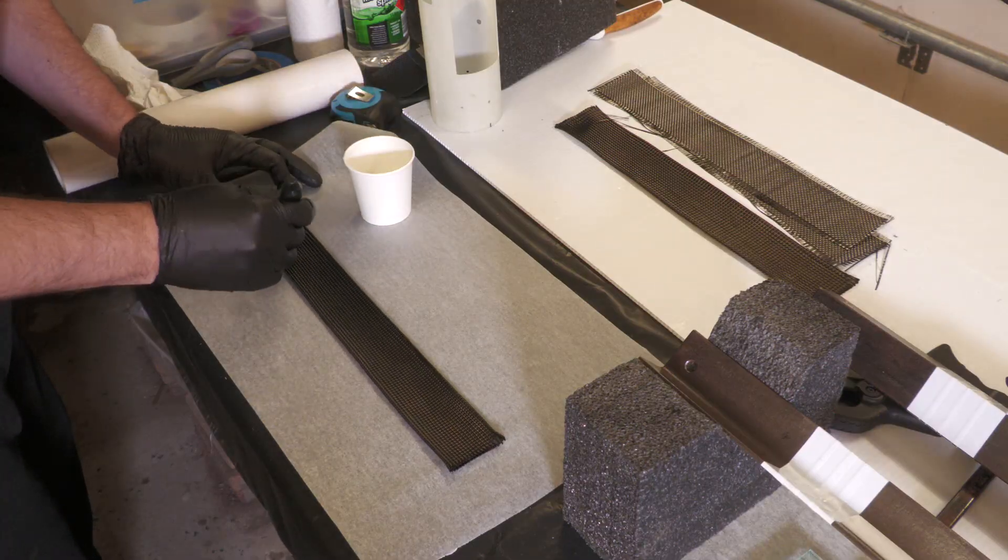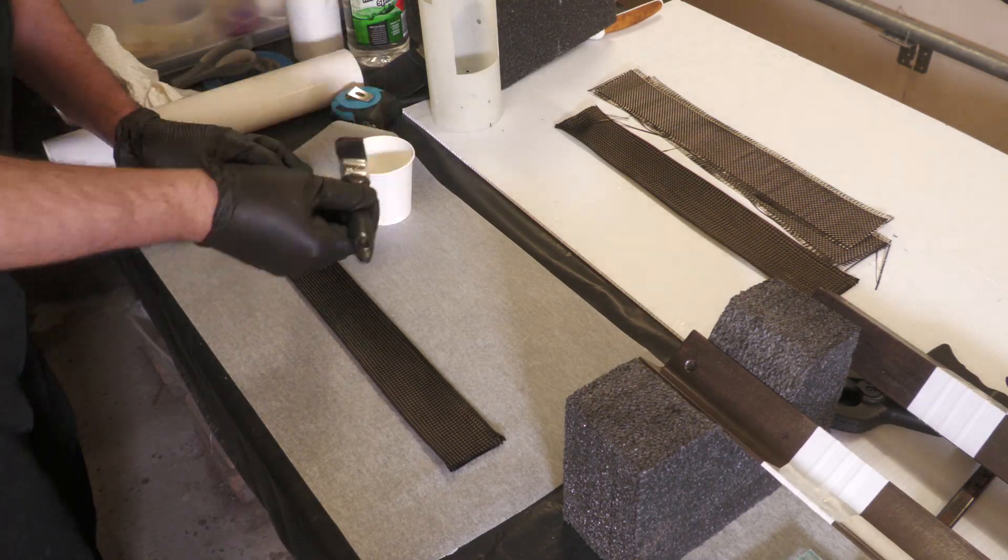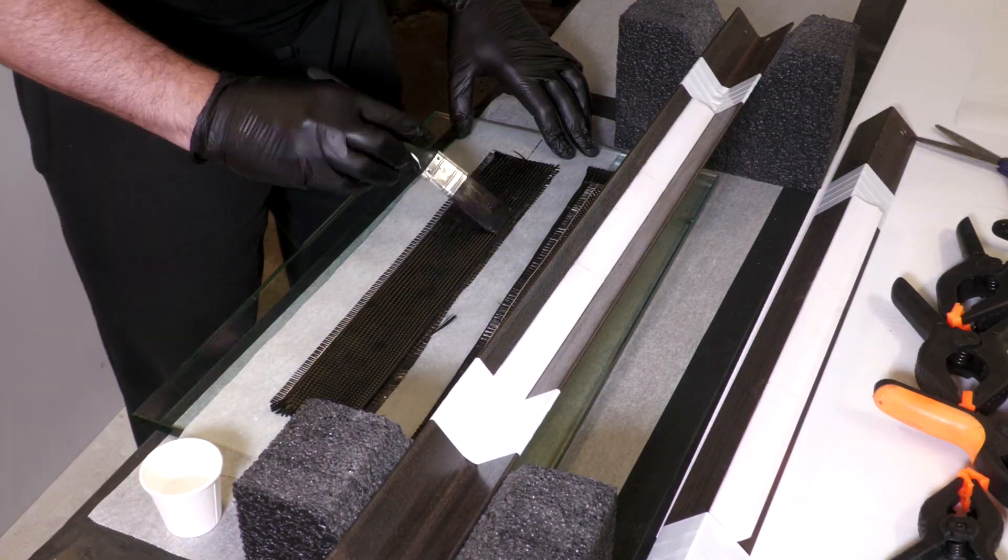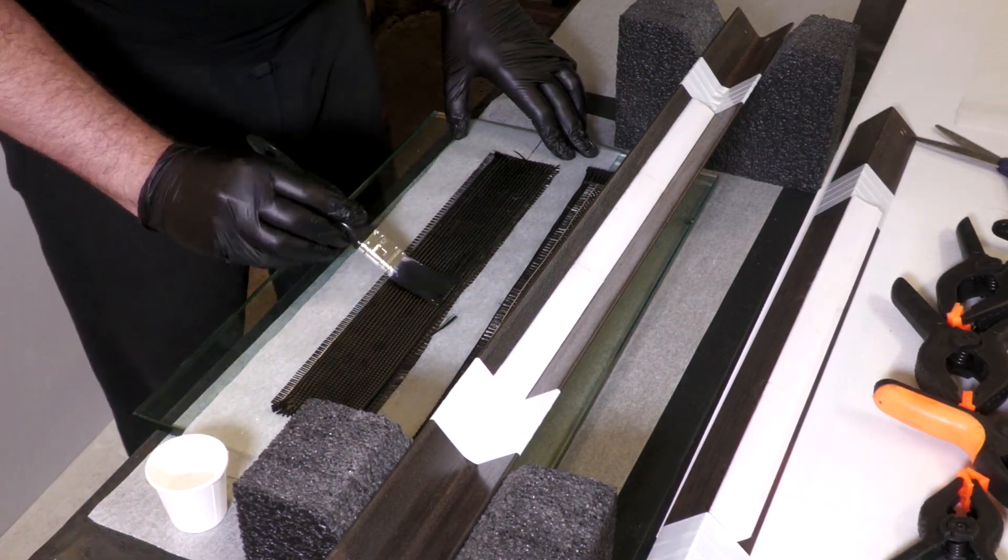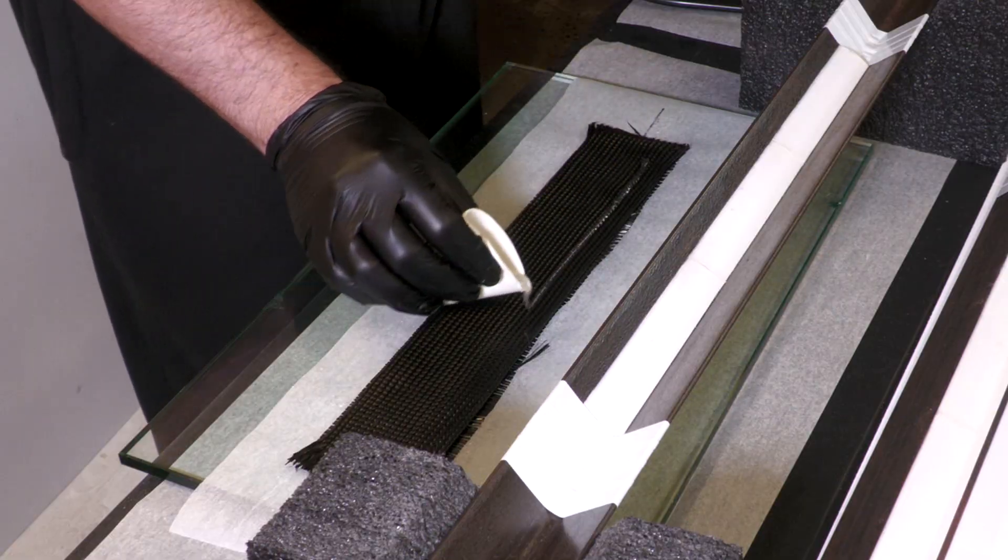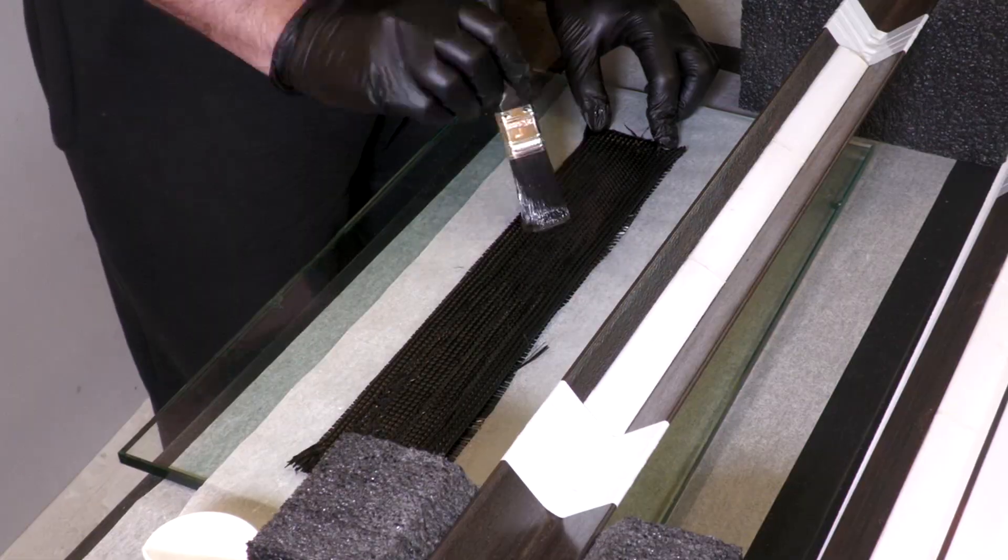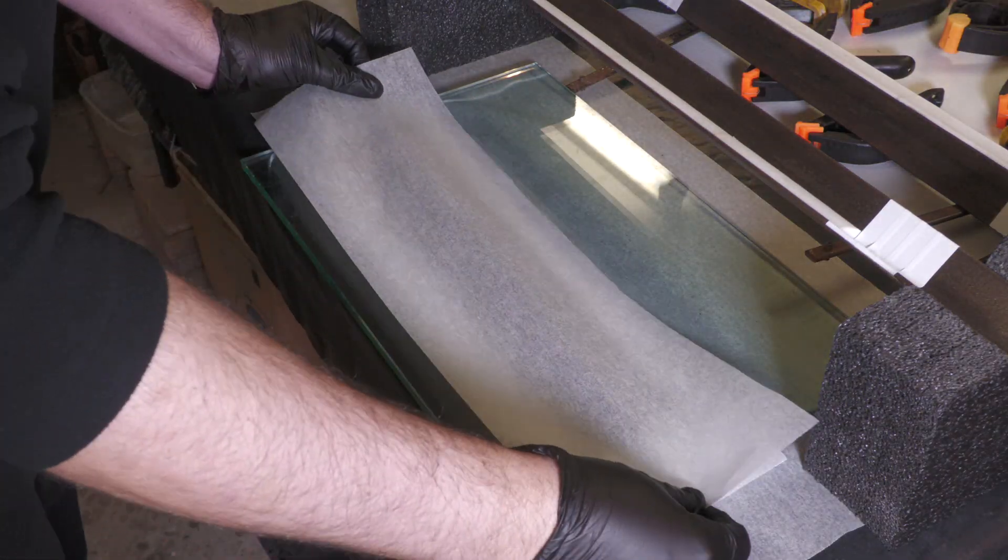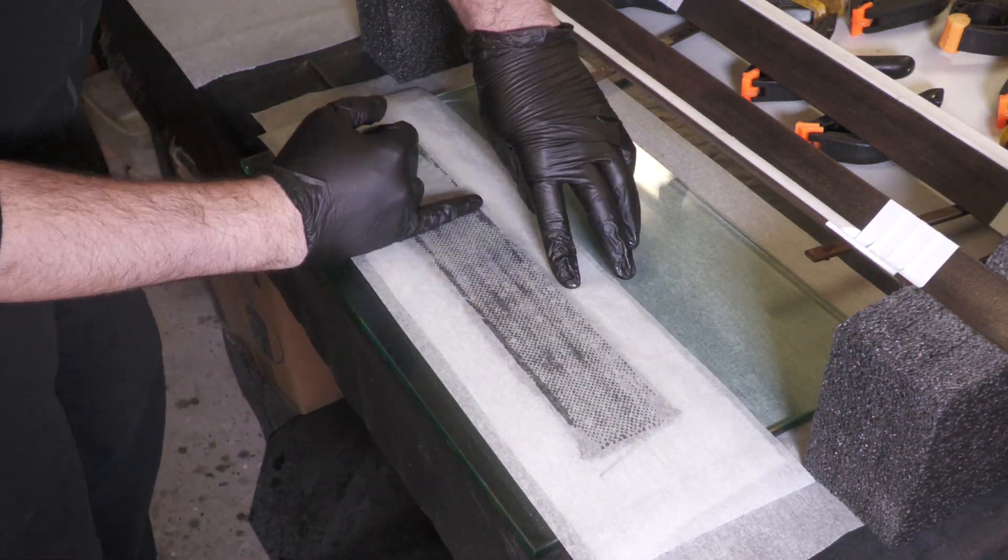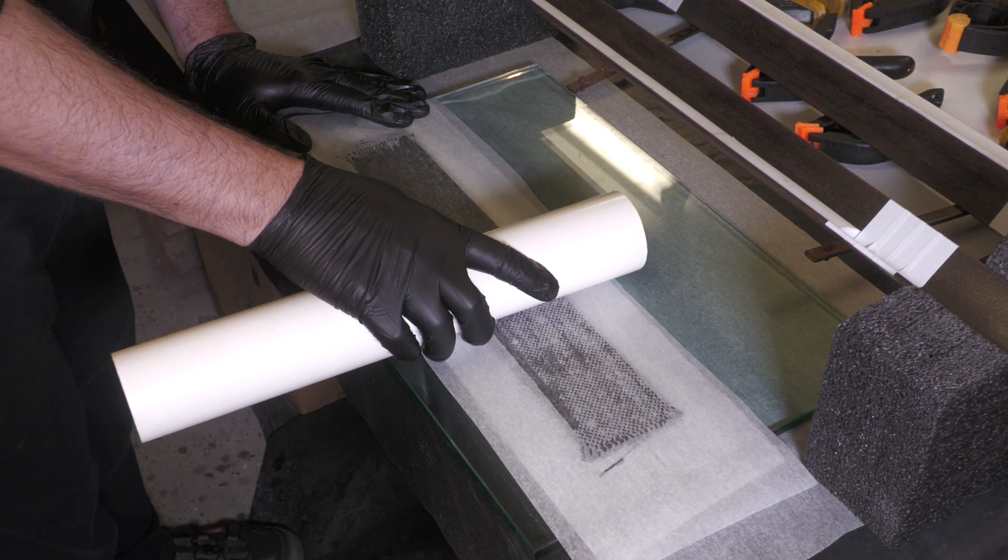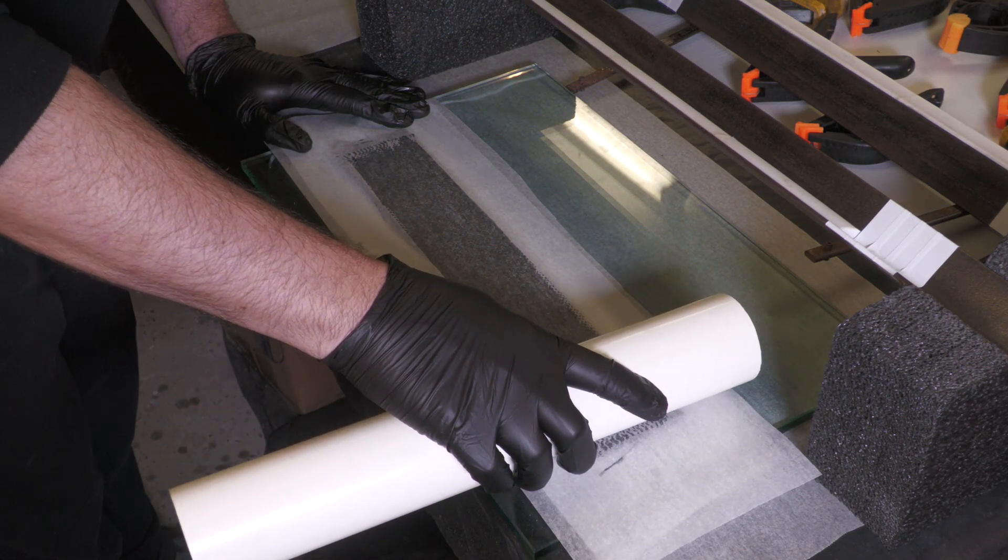We wetted out the sleeve from both sides first before adding it to the rest of the sandwich. Everything was just sandwiched between two sheets of baking paper and then we used a PVC pipe to squeegee out the excess glue and drive out any of the bubbles.